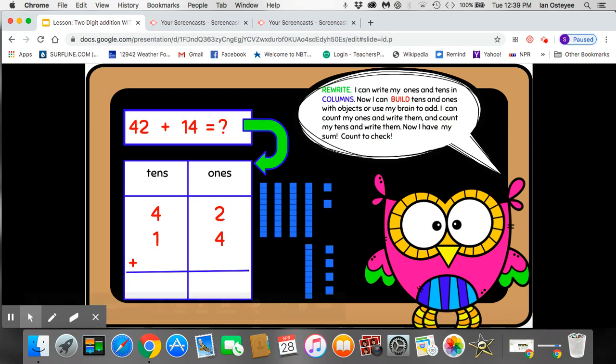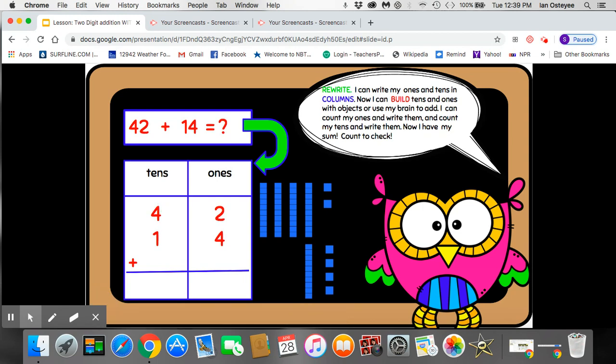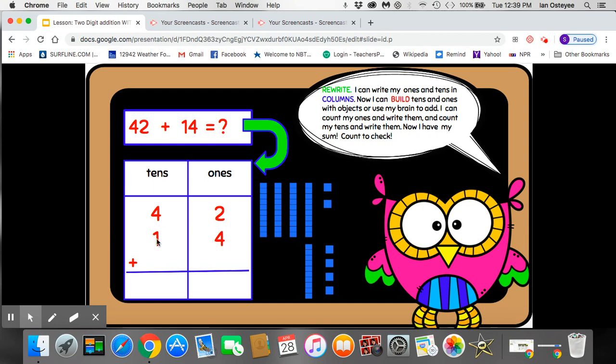So let's see. I've written four tens here and two ones here. And then I've taken 14. I know 14 has one ten and four ones. So I've decided that to solve this problem, I'm going to use objects today. So here are my tens and ones.